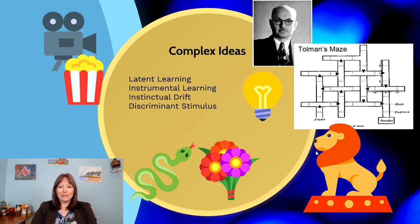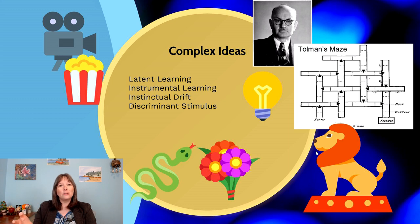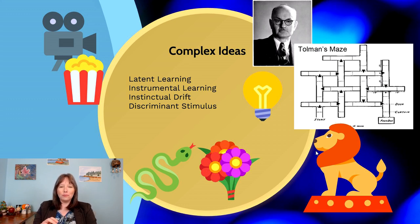Tolman worked with rats in mazes and discovered that rats didn't necessarily have to be rewarded right away to learn. In his classic experiment with a complex rat maze, he had three groups. Group one received food rewards every day as soon as they completed the maze. Group two received no rewards until day 12 — they did the maze for 11 days with no reward. Group three never received any rewards at all.